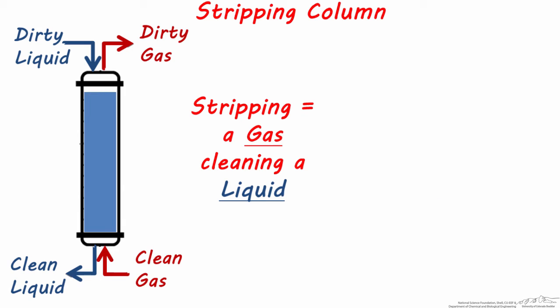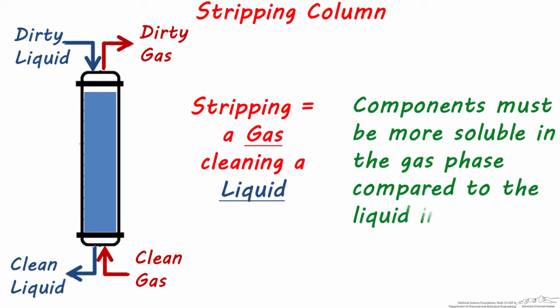As with absorption, because solubility is the driving force for this separation, components being transferred need to be more soluble in the gas phase compared to the liquid, otherwise the liquid won't be purified. Common gases used in stripping columns include steam and air.